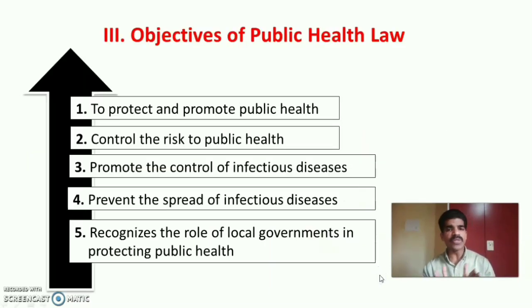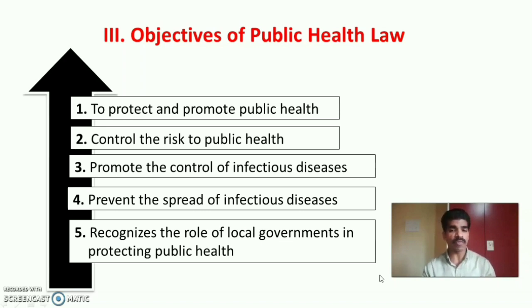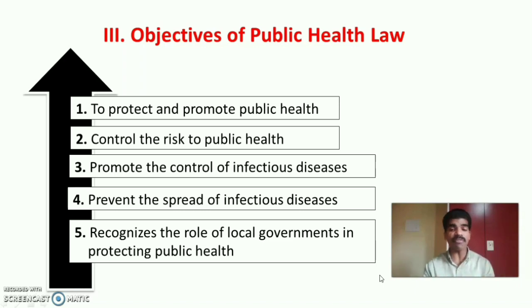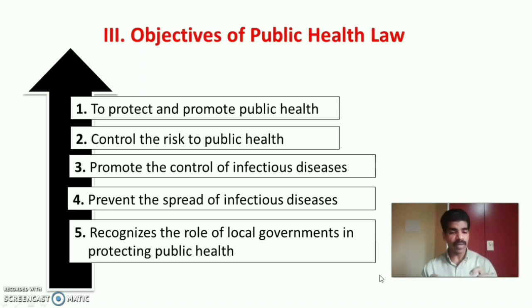Next are the objectives of public health law. First, to protect and promote the public health. Second, to control the risk to public health. Third, to promote the control of infectious diseases in our country. Fourth, to prevent the spread of infectious or communicable diseases. The last objective is to recognize the role of local governments in protecting the public health of citizens in the country.